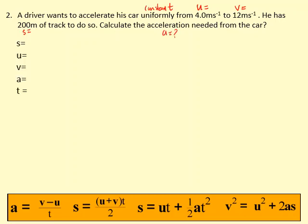So let's fill our information in. So what we want to do is we want to find the equation without the T in it, which is this one here. So V squared equals U squared plus 2AS. Fill the information in. 12 squared equals 4 squared plus 2 times A, which we don't know, times S.